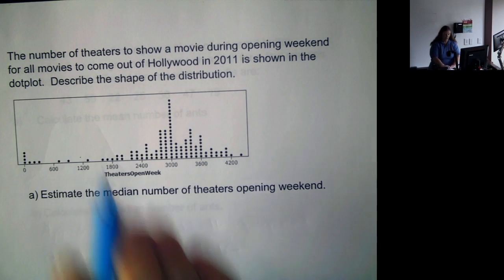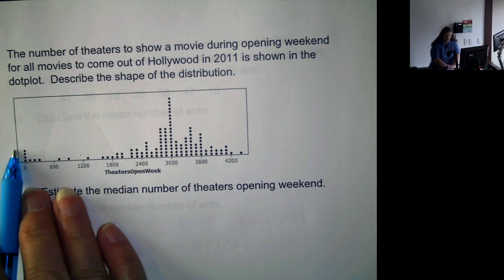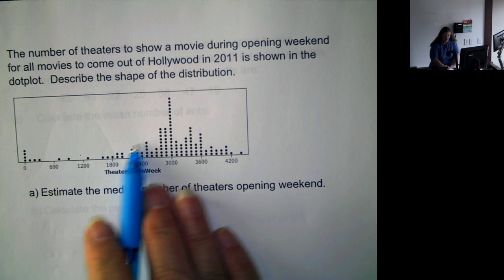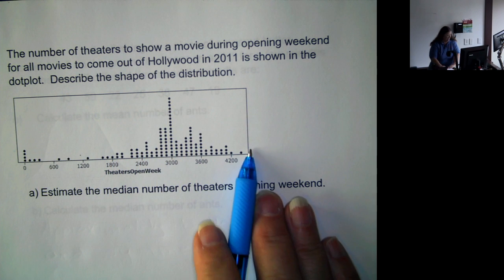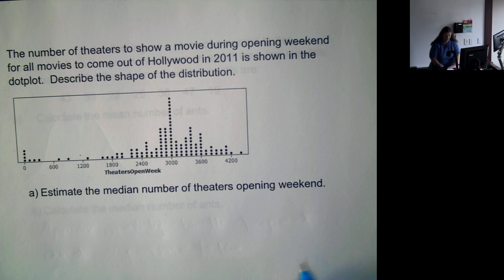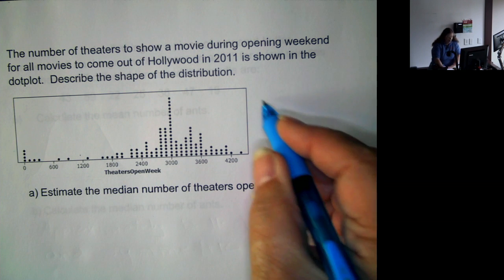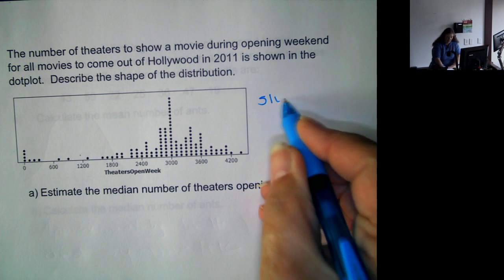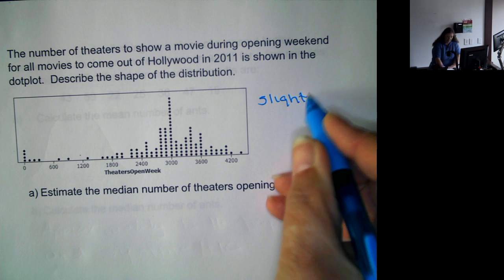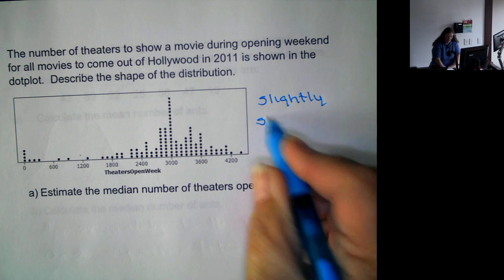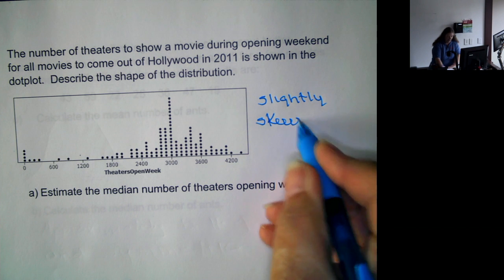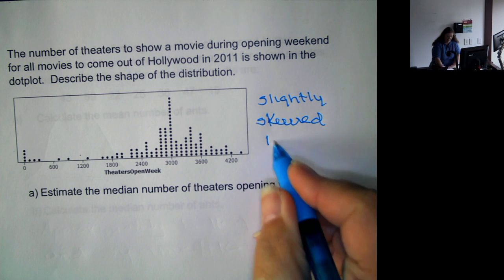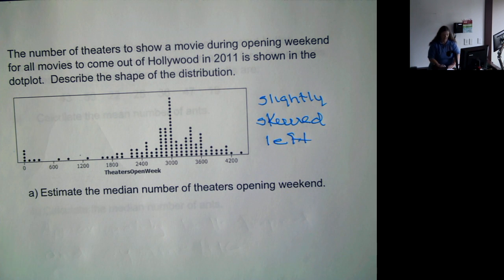So if we look at the shape of this distribution, we see it kind of has a long tail and then it peaks and comes back down. So this is slightly skewed to the left because the tail goes out to the left.